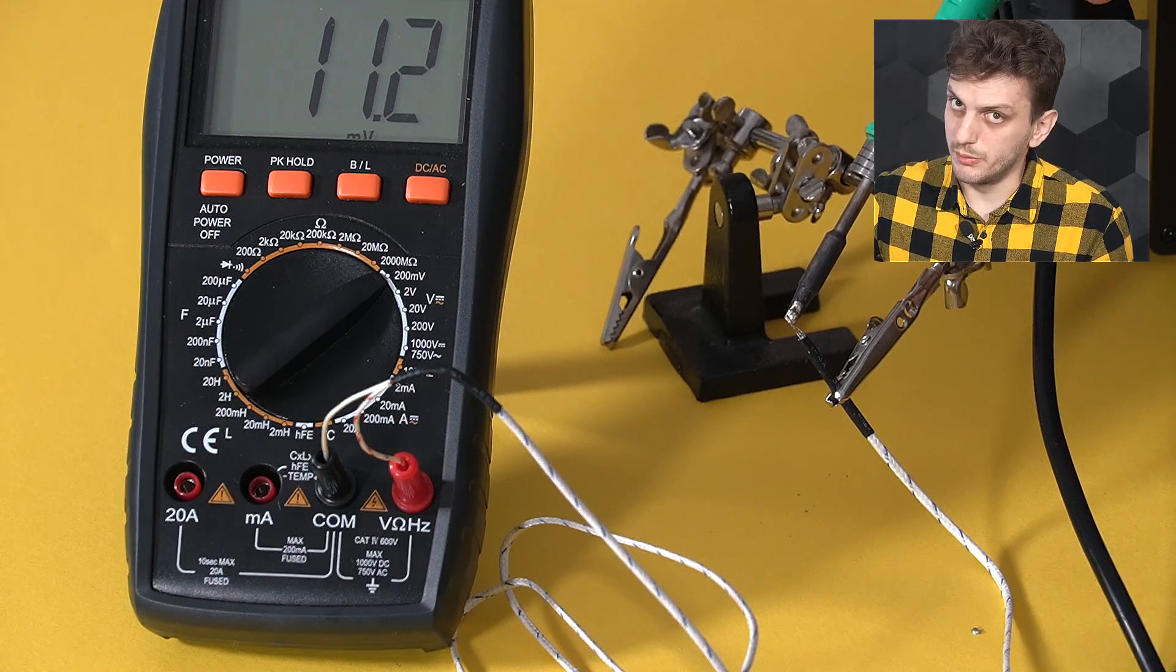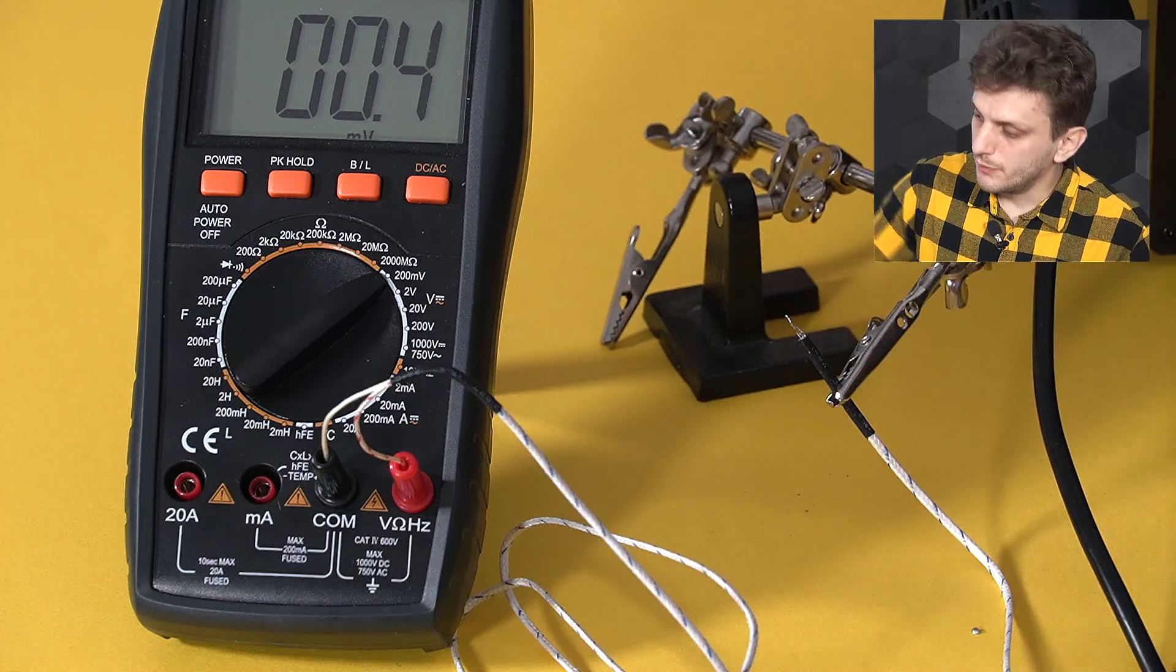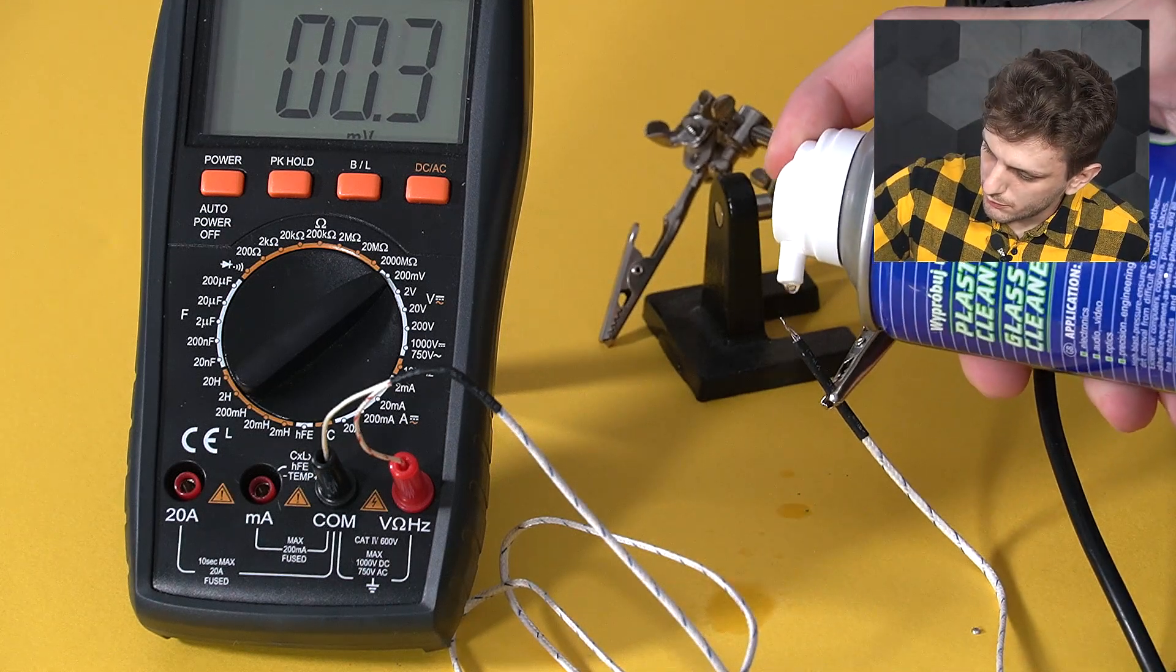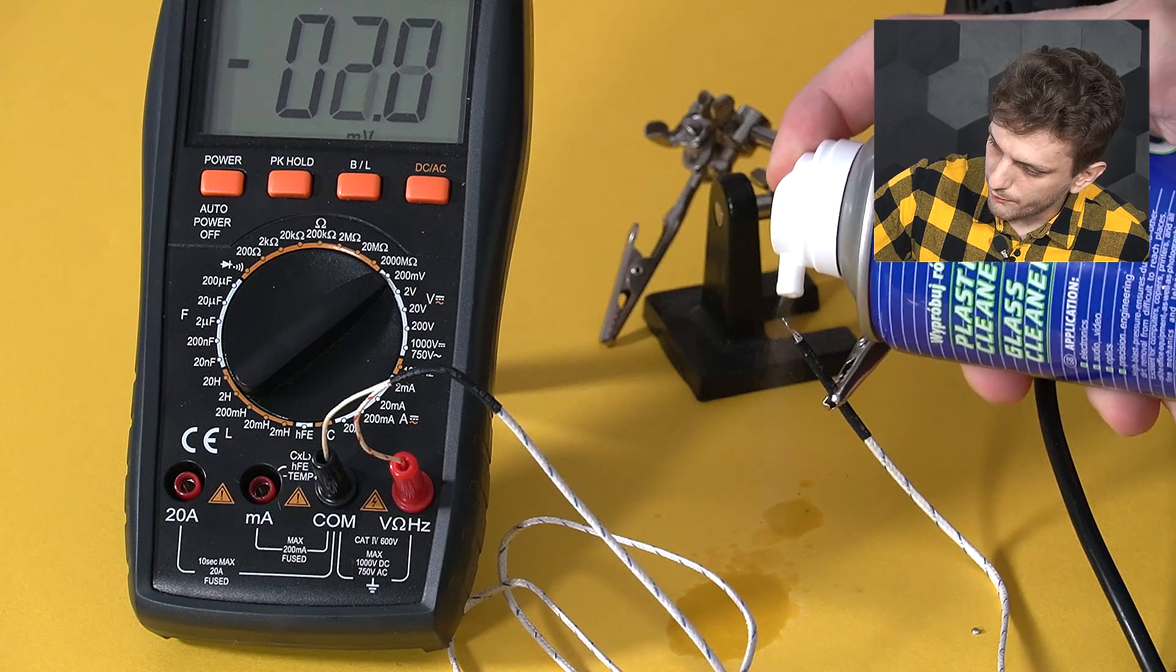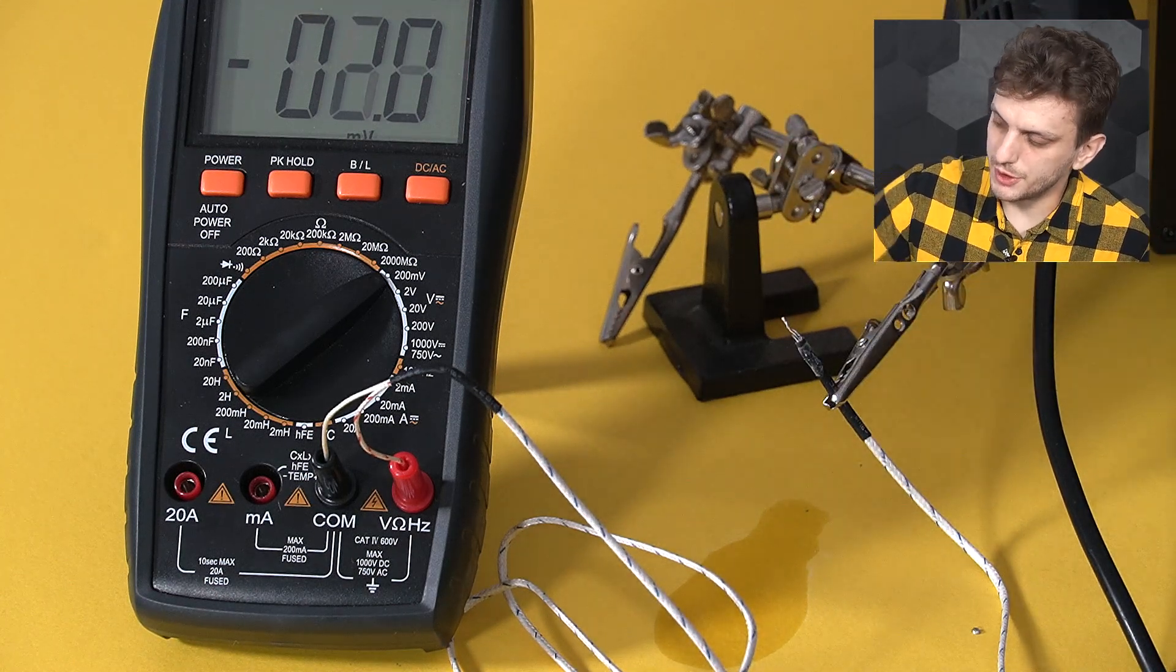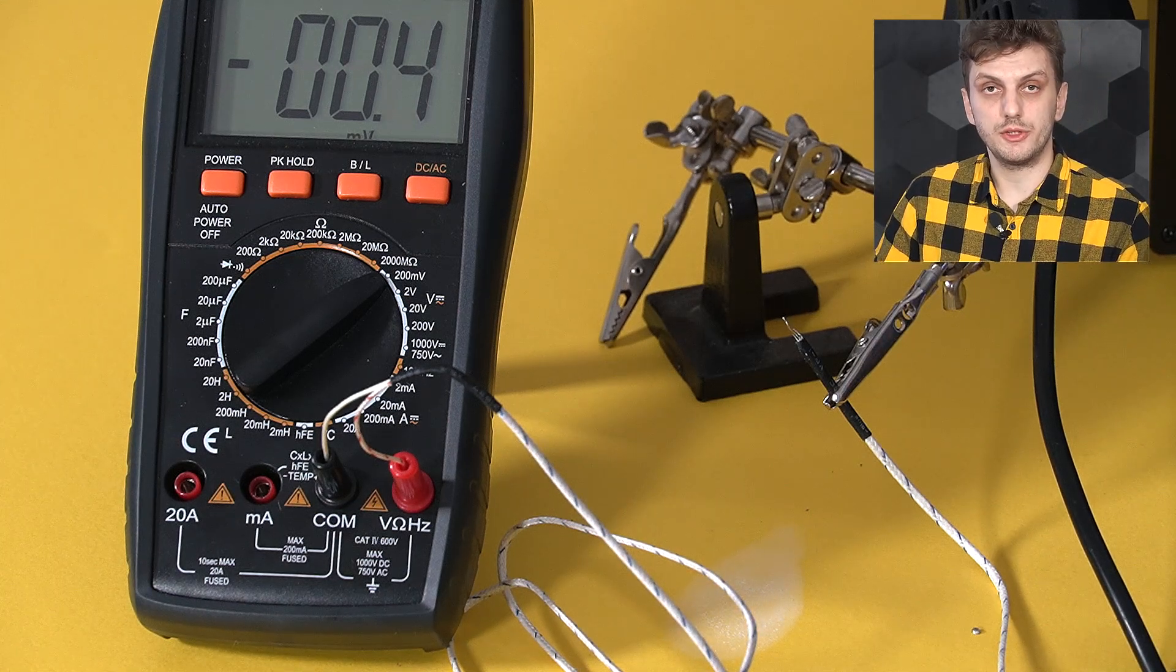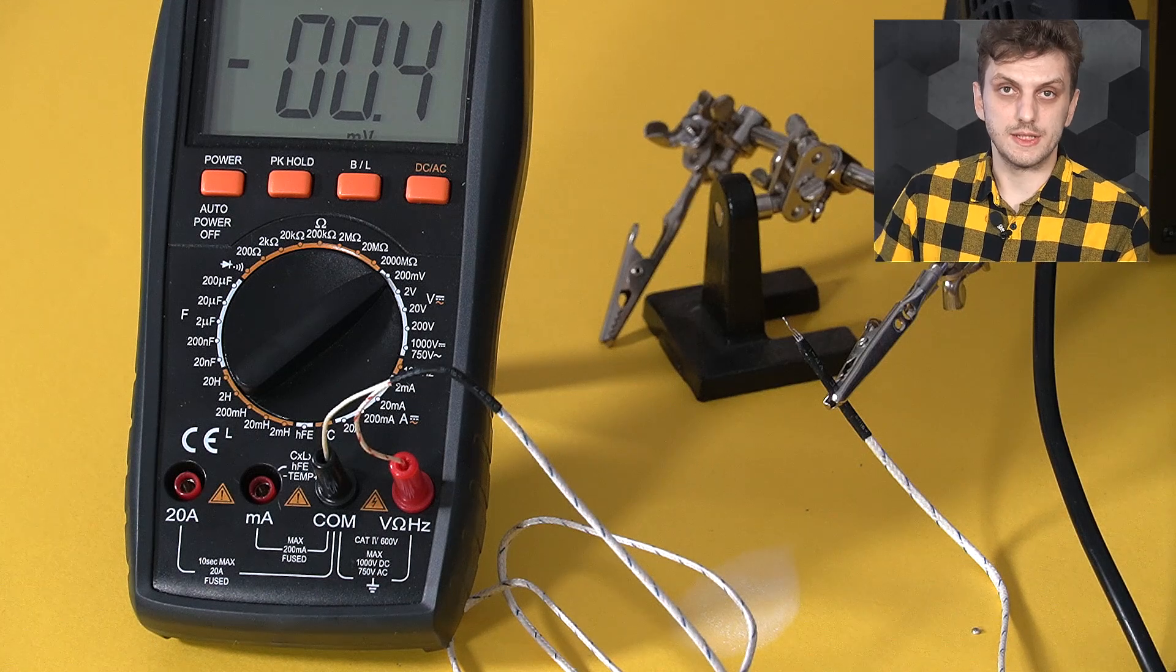But of course the thermocouple will work the other way around, so if we cool it down, we start to get negative voltages. So we have a positive temperature coefficient, but this time in voltage generation rather than in resistance variation.